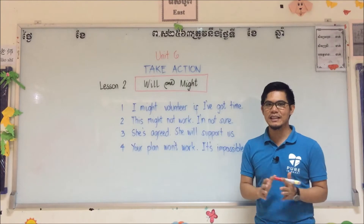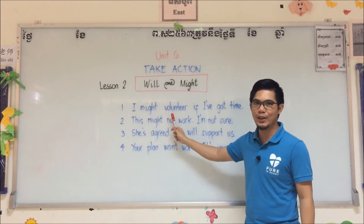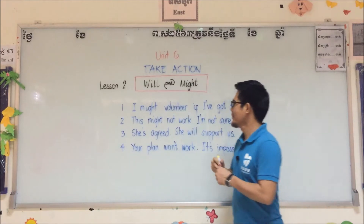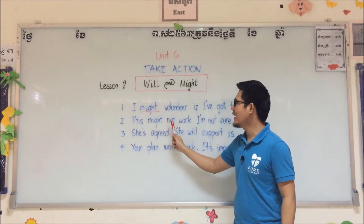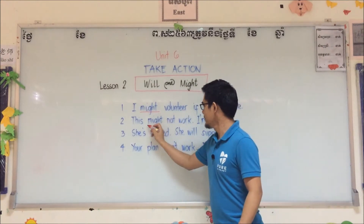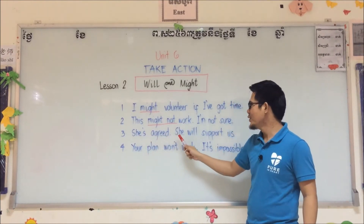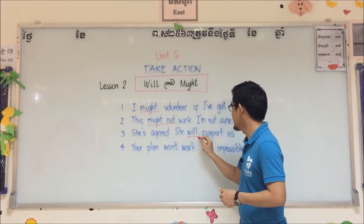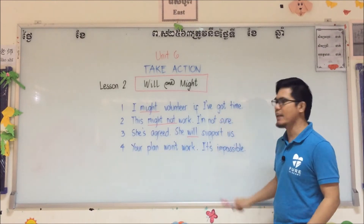But before we go to our rules, let's read our four sentences first. Ready? Number one: 'I might volunteer if I've got time.' Number two: 'This might not work, I'm not sure.' Number three: 'She has agreed — she will support us.' And lastly, number four: 'Your plan won't work, it's impossible.'